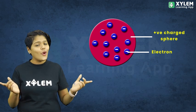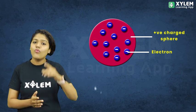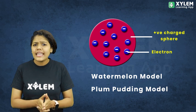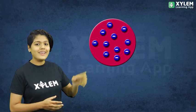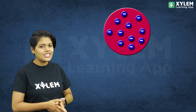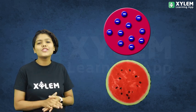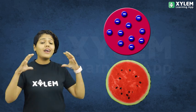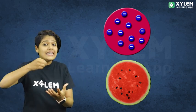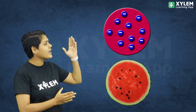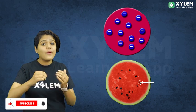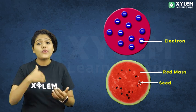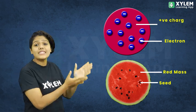This model is also known by different names, like the watermelon model and the plum pudding model. Let's see why this model is called so. Here you can see the J.J. Thomson model of atom and also a sliced piece of watermelon — let's compare them. The seeds in the watermelon represent the electrons, and the red portion represents the positive sphere.